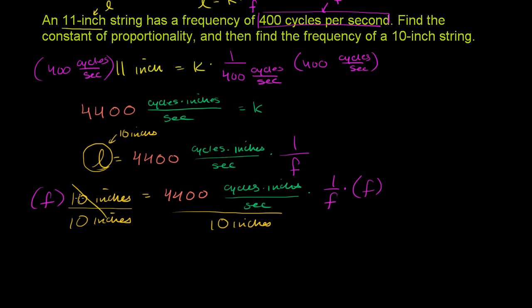The left-hand side, we're just left with the frequency. On the right-hand side, we have 4,400 divided by 10 is 440. And then you have cycles inches over second divided by inches — the inches cancel out with inches — and you're just left with cycles per second. So our frequency when our string is 10 inches long is 440 cycles per second.